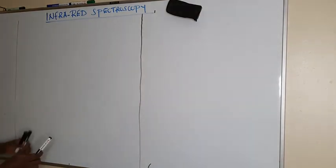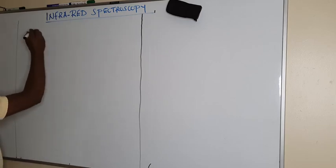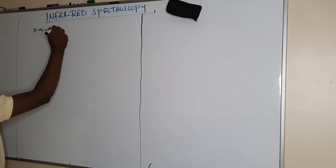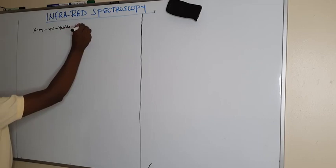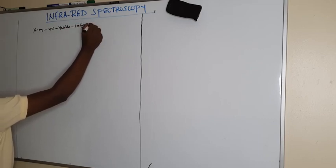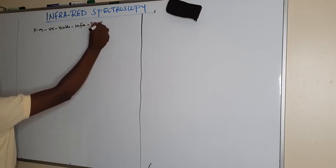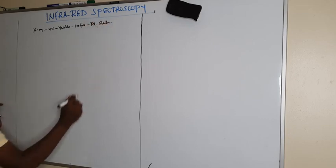Infrared is the one that follows UV light. As we remember in the introduction, if we have x-ray, x-ray is followed by the UV light, then the visible, then we go to infrared. From infrared, that's when we go to the television wave, then to the radio wave. So this is how they follow each other.